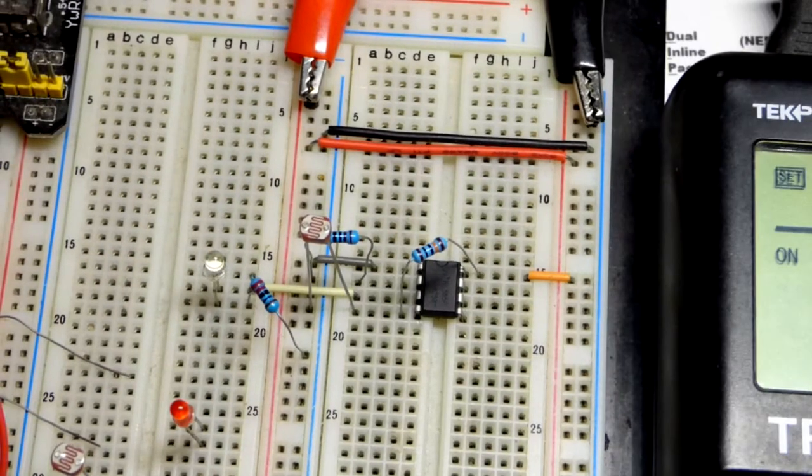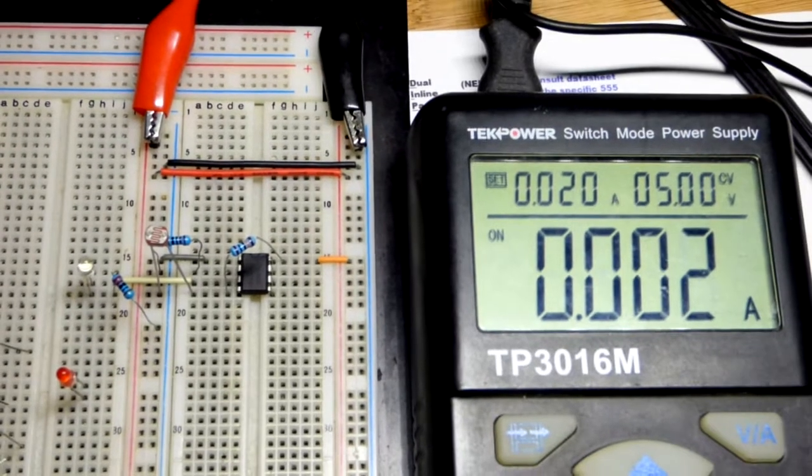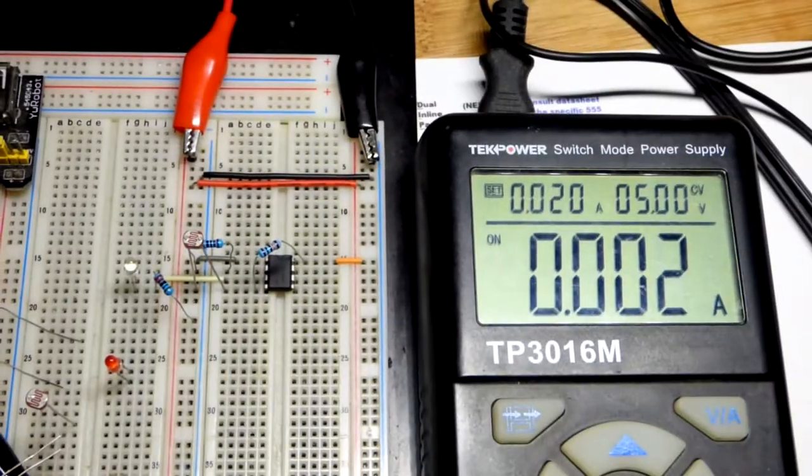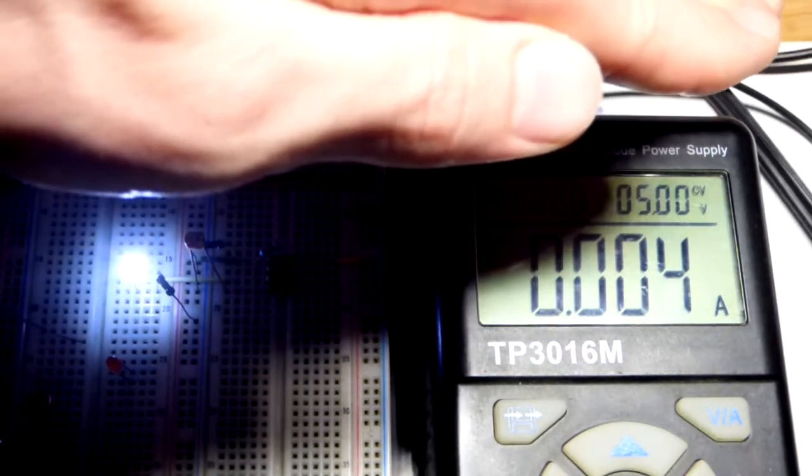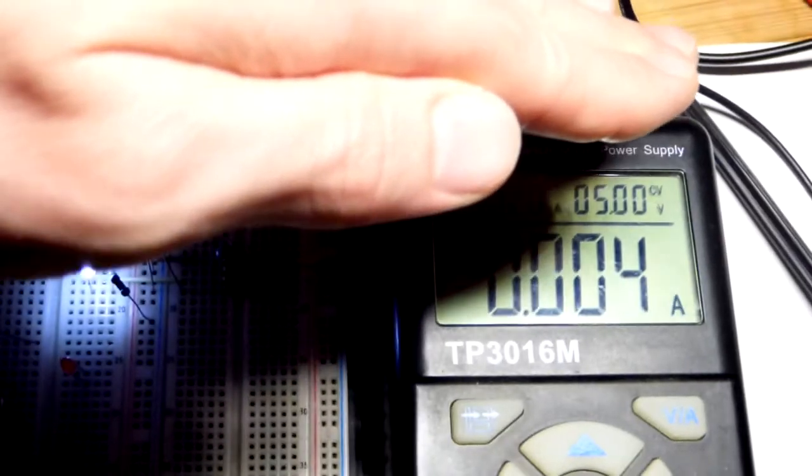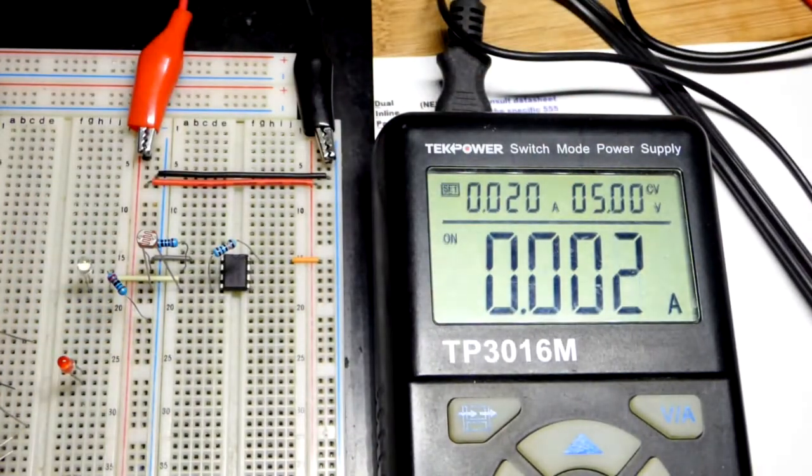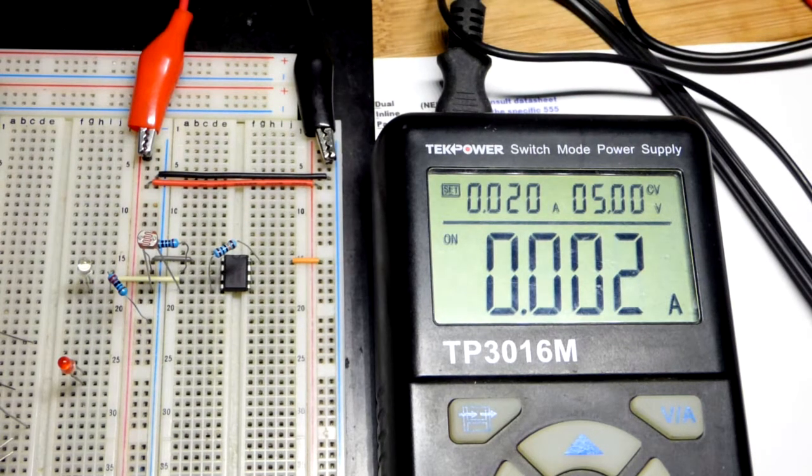Now this isn't a perfect circuit. We are actually using about two milliamps of current approximately. This isn't completely accurate even when the LED is off. So we could probably improve this even with the 555 timer, but there's definitely ways to improve it. But you can see, even when the LED is on, we are only using about four milliamps of current. So this is pretty efficient.